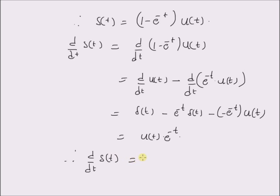We are left with e power minus t multiplied by u of t. Therefore the derivative of the unit step response s of t is equal to e power minus t into u of t, which is of course equal to the impulse response h of t. Thus, using the system equation, we have verified the relation between the unit step response and the impulse response. Thanks for watching.